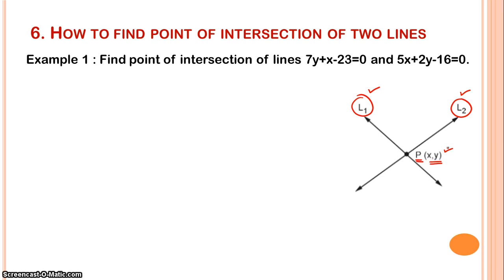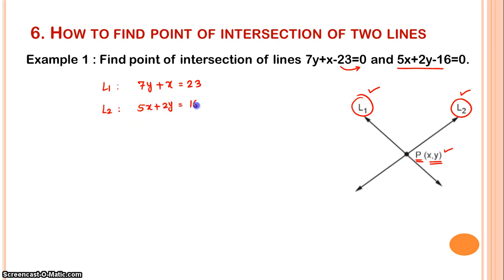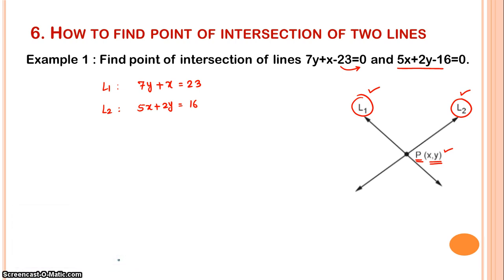Let's understand through an example. Find the point of intersection of the lines: L1 is 7y plus x minus 23 equals 0, which we can write as 7y plus x equals 23. L2 is x plus 2y equals 16. We need to find where these two lines intersect. So let me assume that point P is the point of intersection.